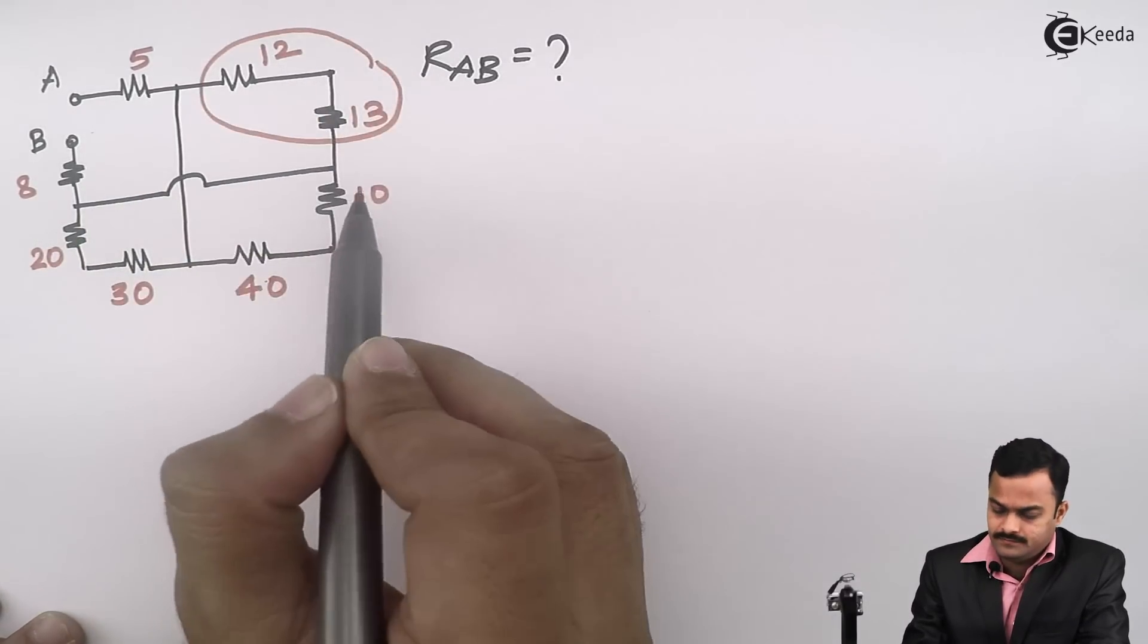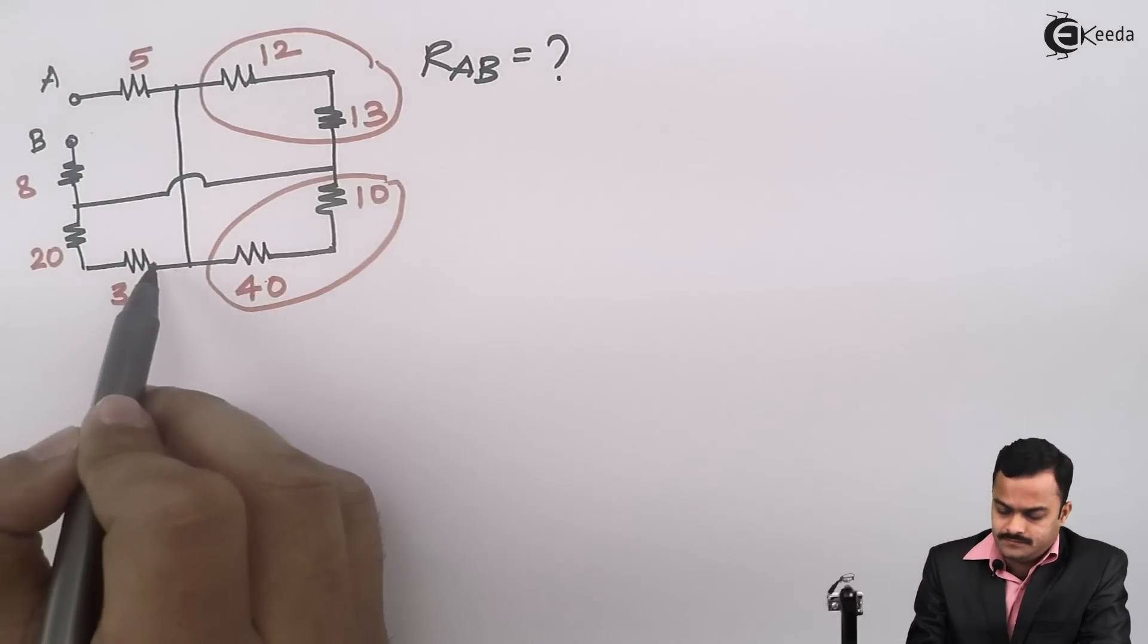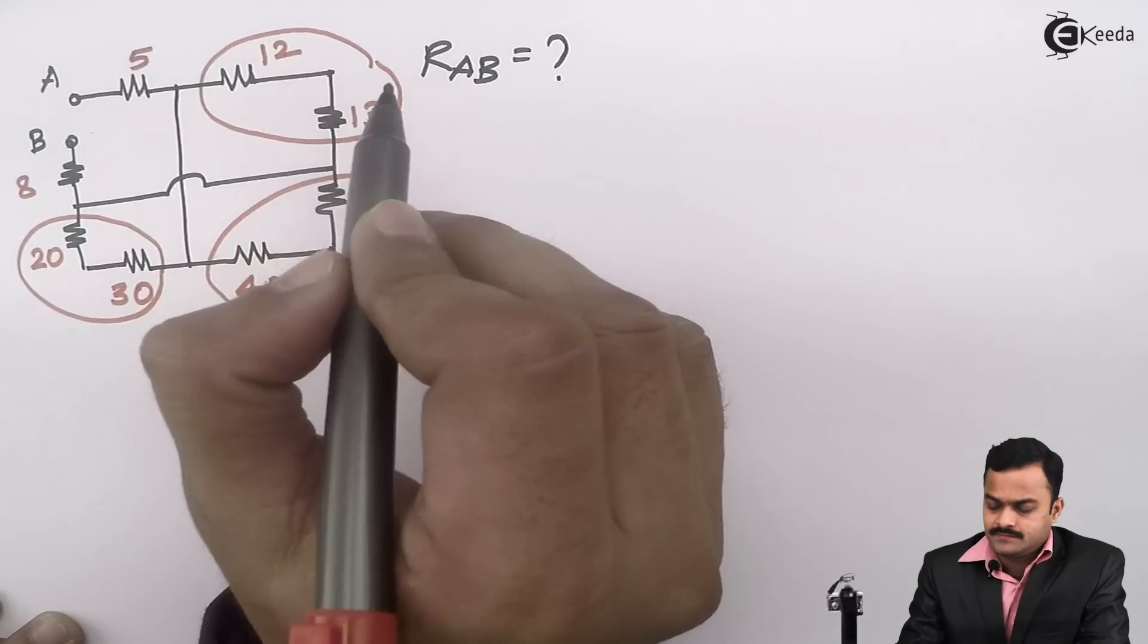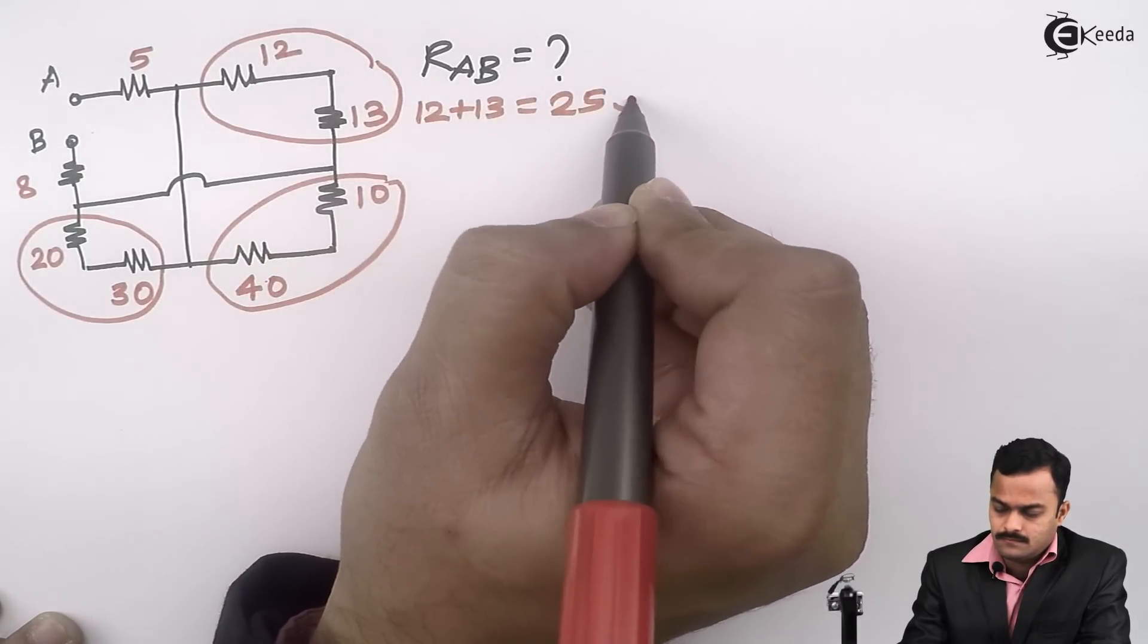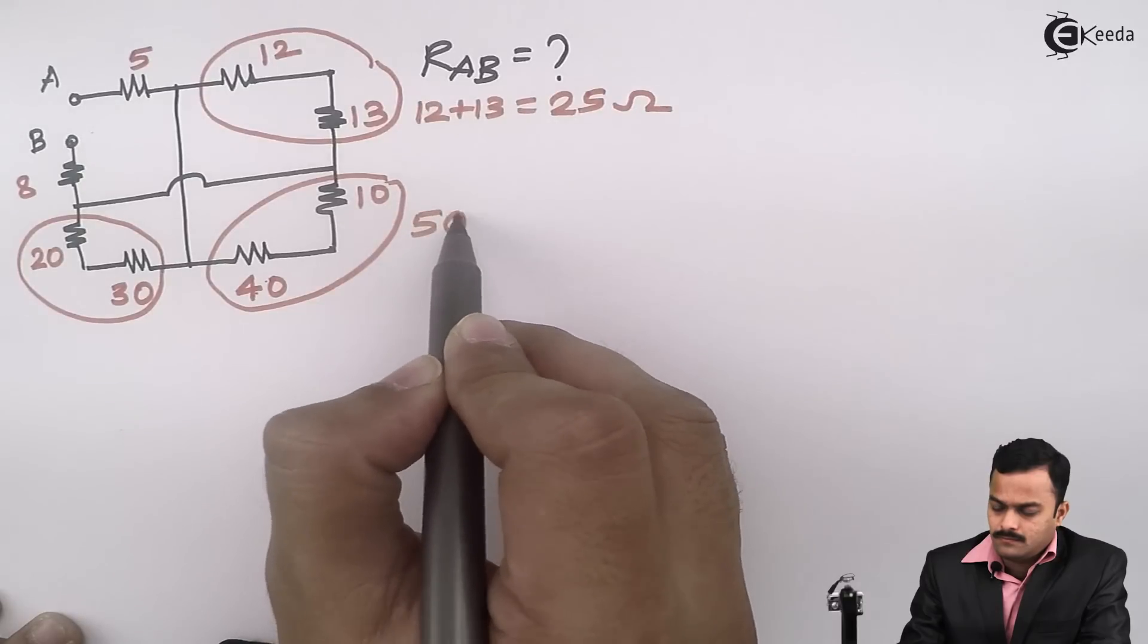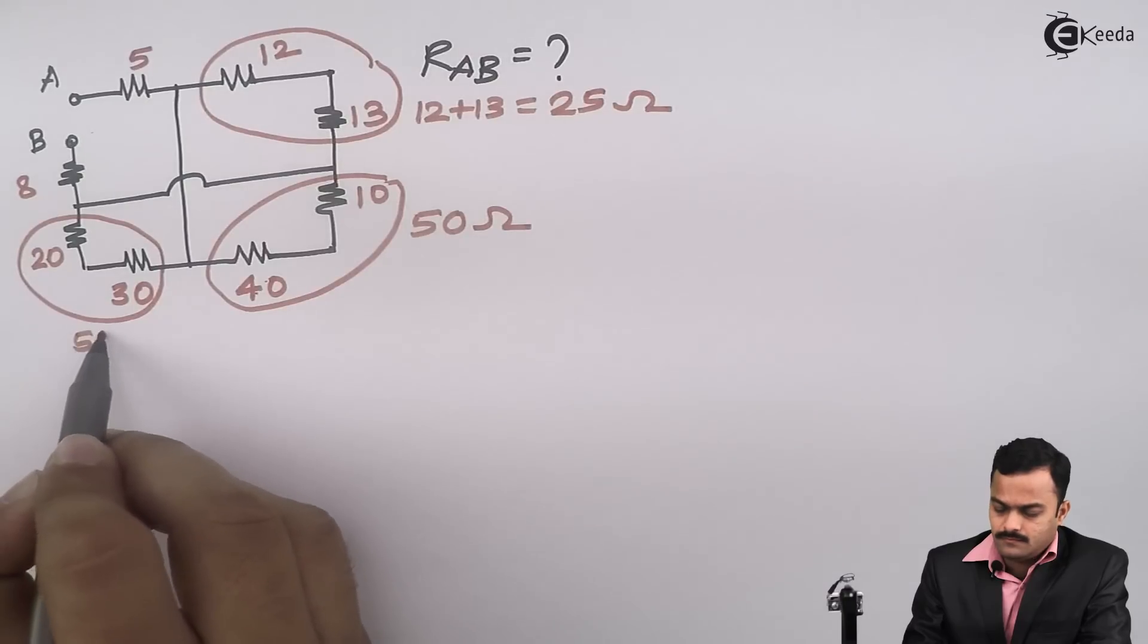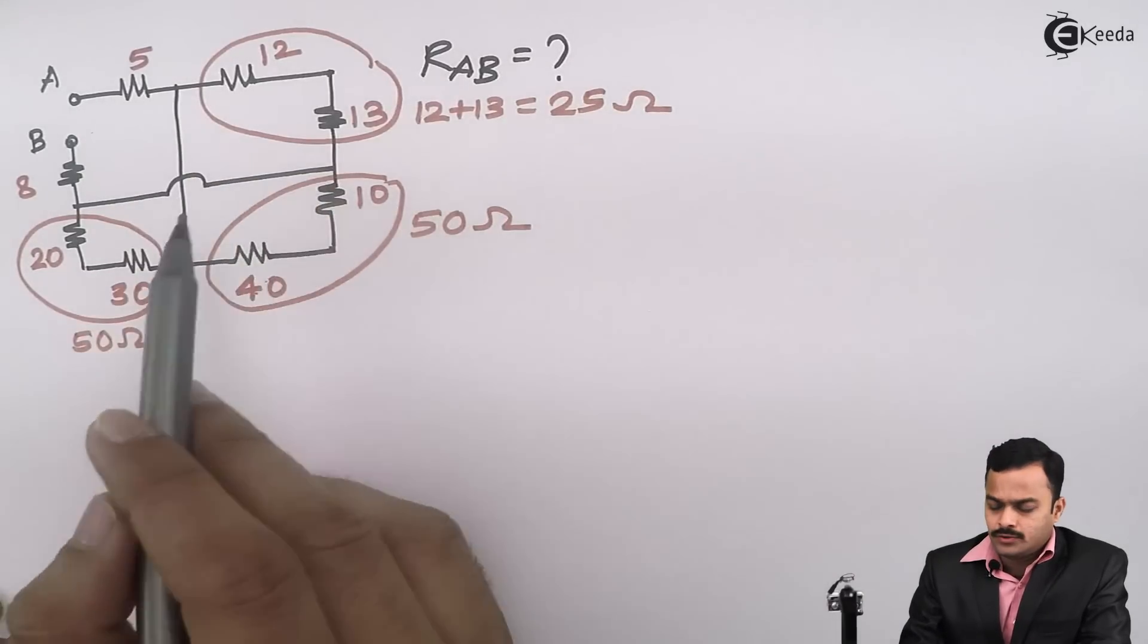This 12 and 13, 10 and 40, and finally 20 and 30. So 12 and 13 will give you 25, 40 and 10 will give you 50, 20 and 30 will give you one more 50. So I will combine all of them into one.